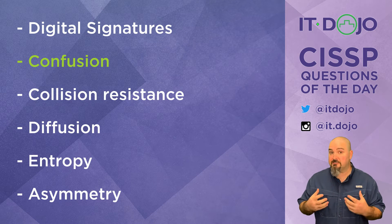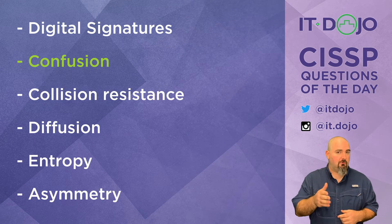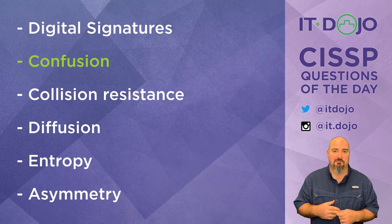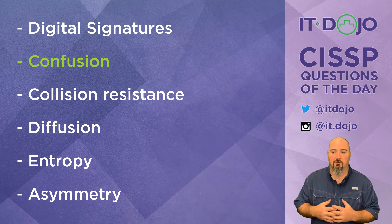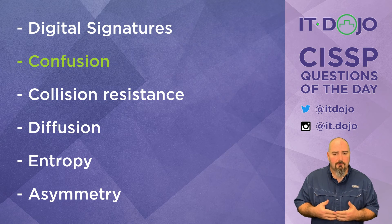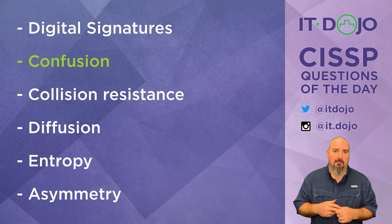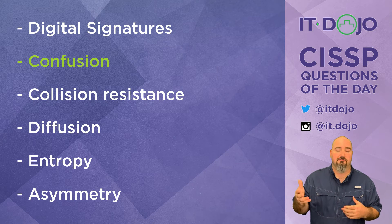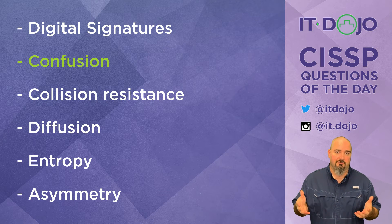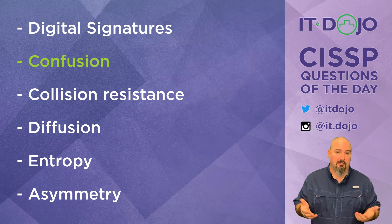Having an algorithm that is resistant to that is what collision resistance is all about. The general way we accomplish collision resistance is to use hashing algorithms that have longer outputs. We've seen this with MD5 and SHA-1 being pushed aside in favor of SHA-2, SHA-256, SHA-384, or SHA-512 and so on. That's what collision resistance is — not the right answer here, but you should be aware of the concept.